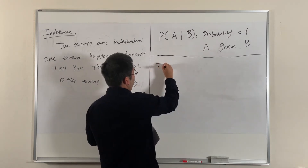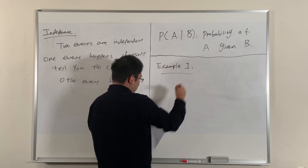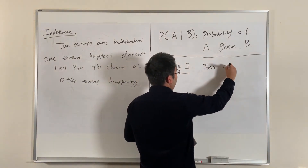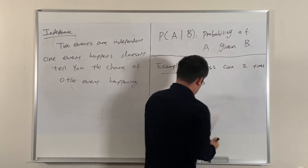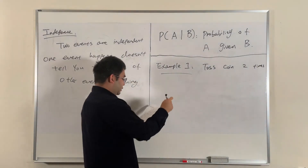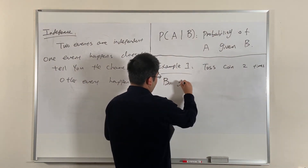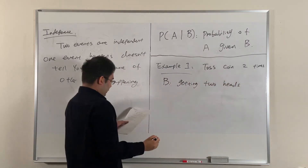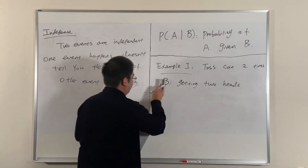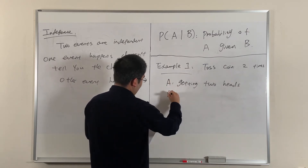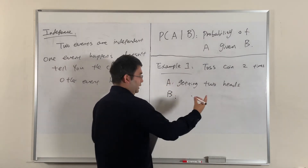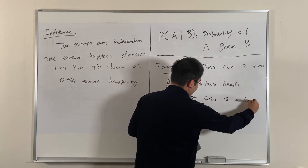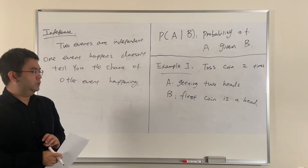So let's do example one. We toss a coin two times. Event A is getting two heads, and event B is that the first coin is a head. These are two events and we're interested in seeing if they're independent.